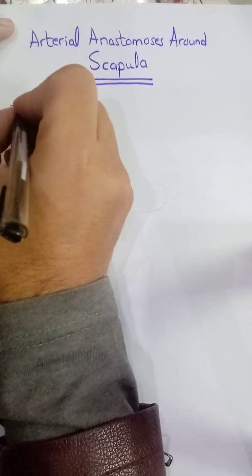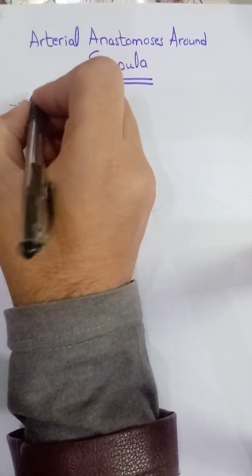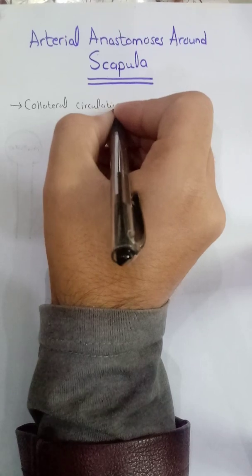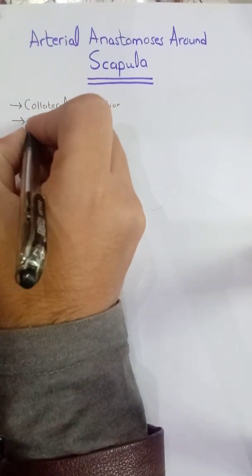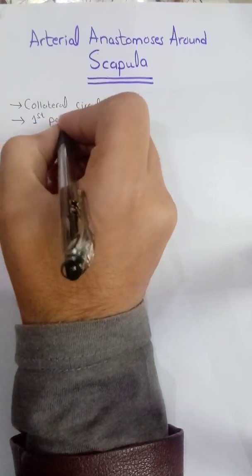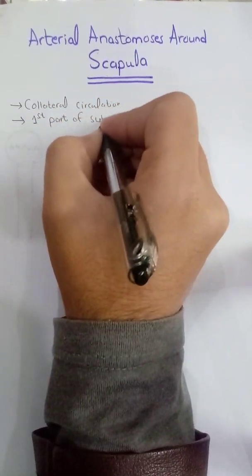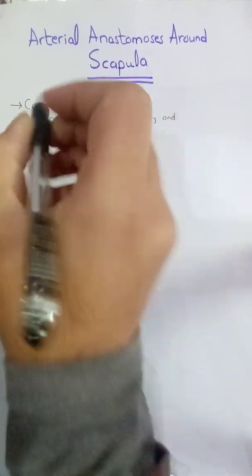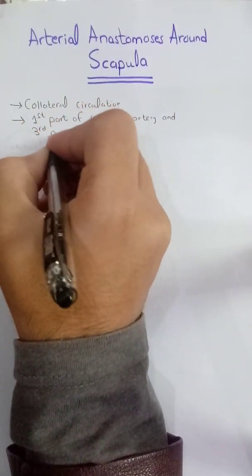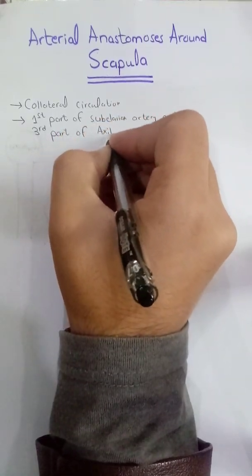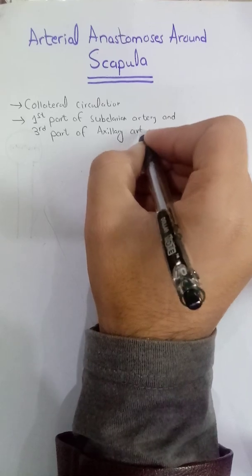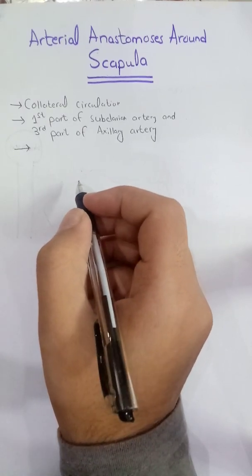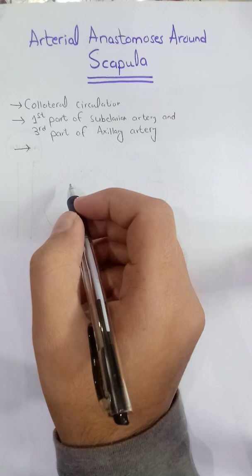This anastomosis is involved in the collateral circulation, and it is between the first part of the subclavian artery and the third part of the axillary artery. These anastomoses are important when there is a ligation of the axillary artery or the subclavian artery.